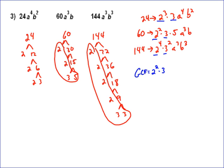If we look at the a's, a to the 4th, a cubed, a cubed, they all have 3 a's. So a cubed. And then you look at the b's, 2 b's, 1 b, 3 b's, they all have 1 b.